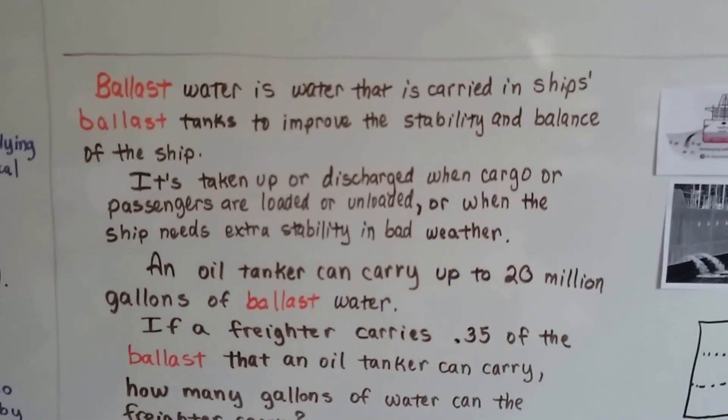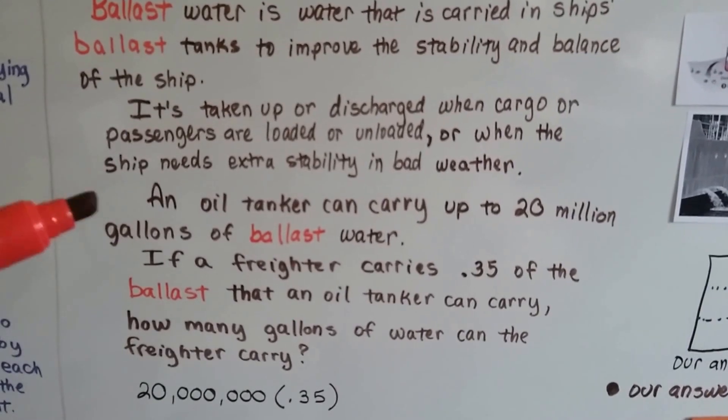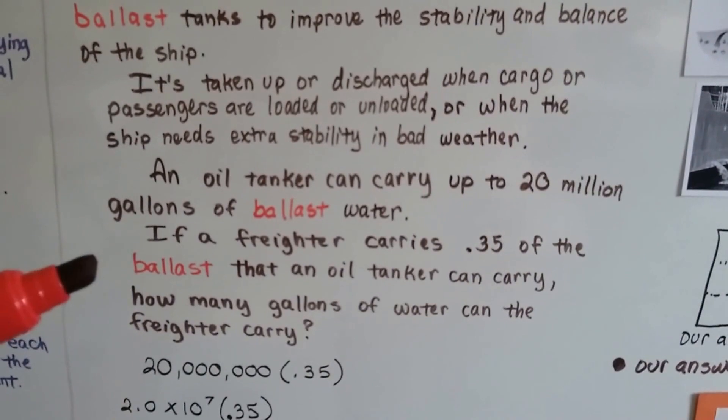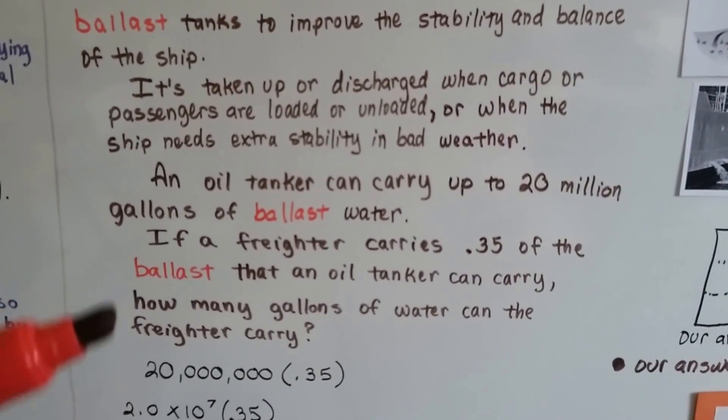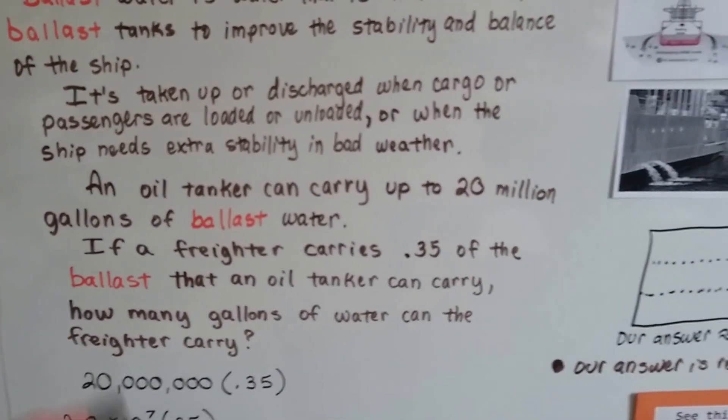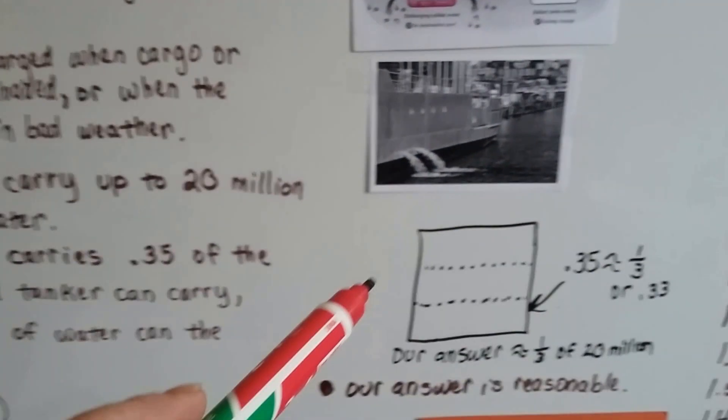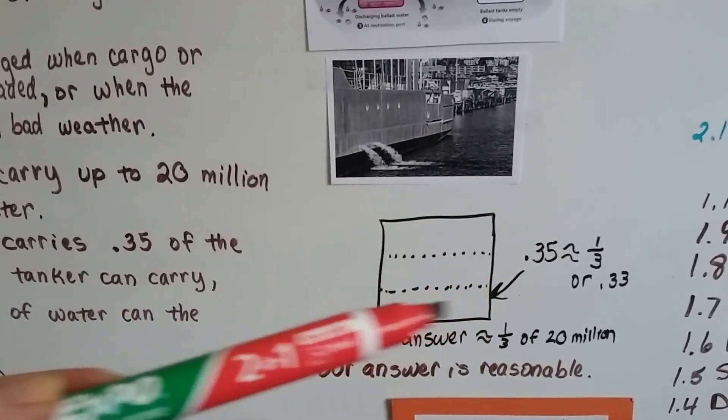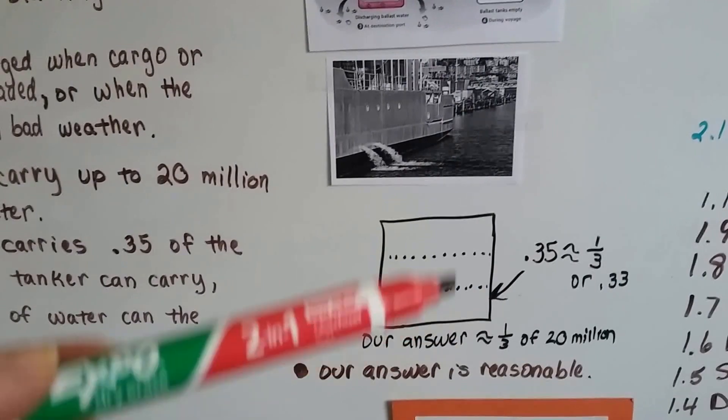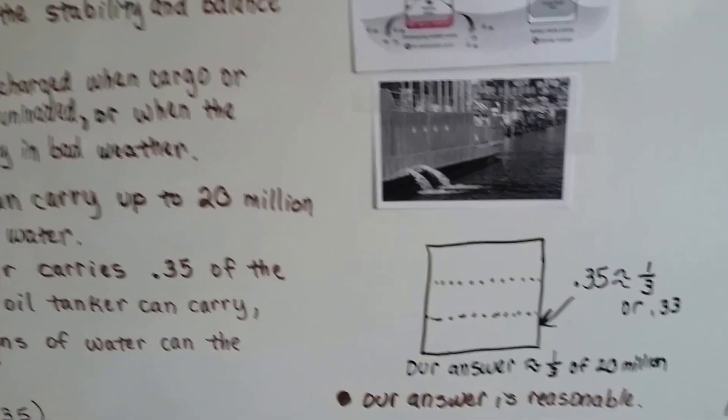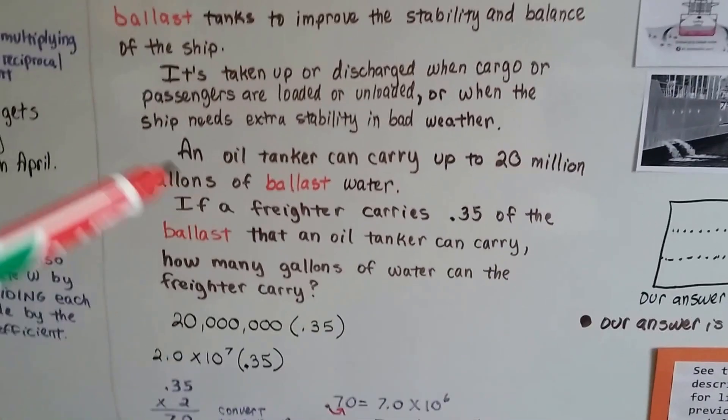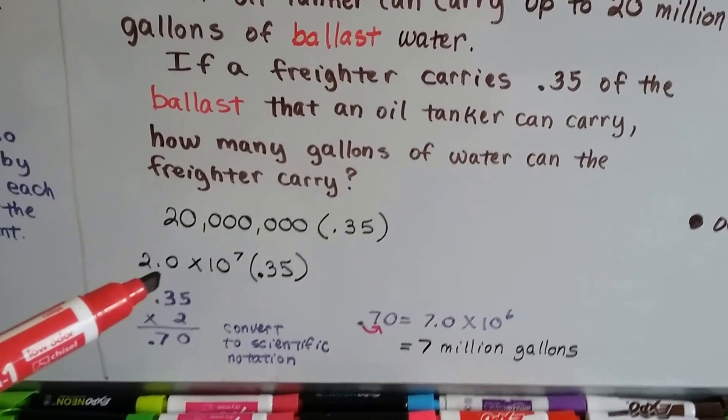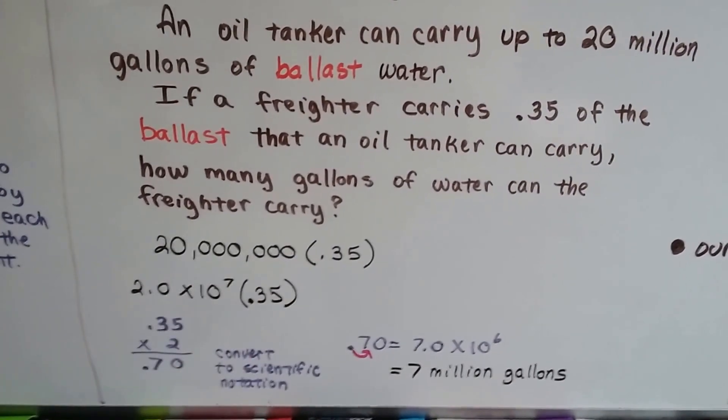So, if an oil tanker can carry up to 20 million gallons of ballast water, if a freighter carries 0.35 of the ballast that an oil tanker can carry, how many gallons of water can the freighter carry? So, we think, well, 0.35 is approximately 0.33, a third. So, that means a freighter can carry about this much compared to an oil tanker carrying this whole thing. So, because 20 million gallons of water is so large, we can even use scientific notation. We need to multiply 20 million times 0.35.